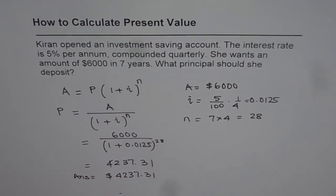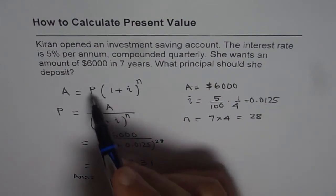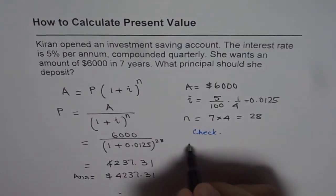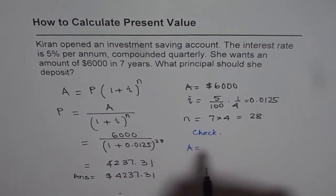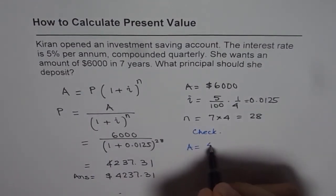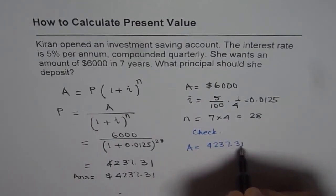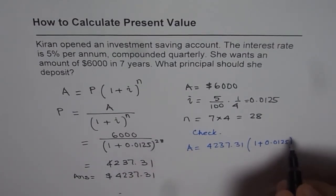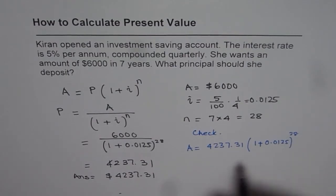Now as a part of check, you can always place this value here and figure out if it's the right answer or not. So let's check it out. So A should be equal to 4237.31 times (1 plus 0.0125) to the power of 28. So you can always check using this formula and then figure out if you are getting the right answer or not.